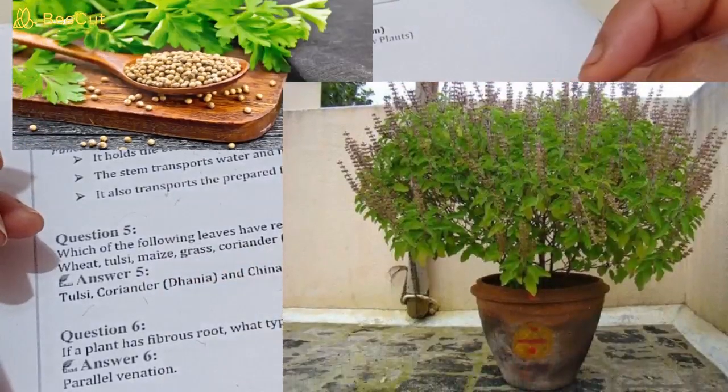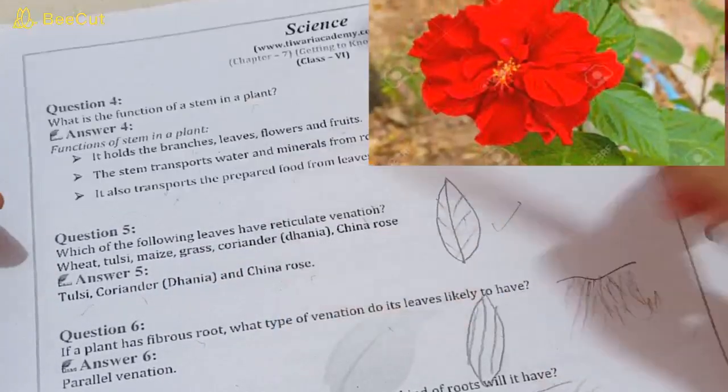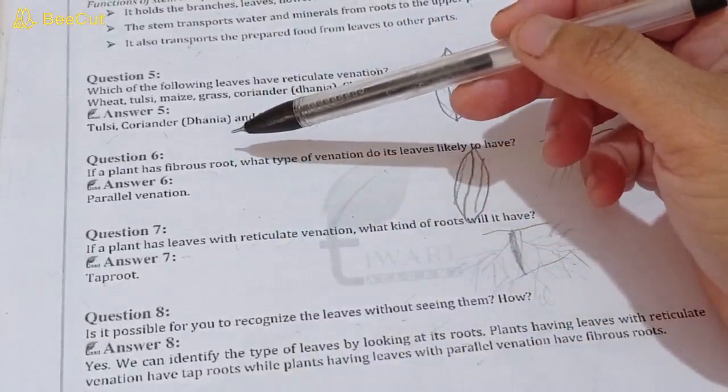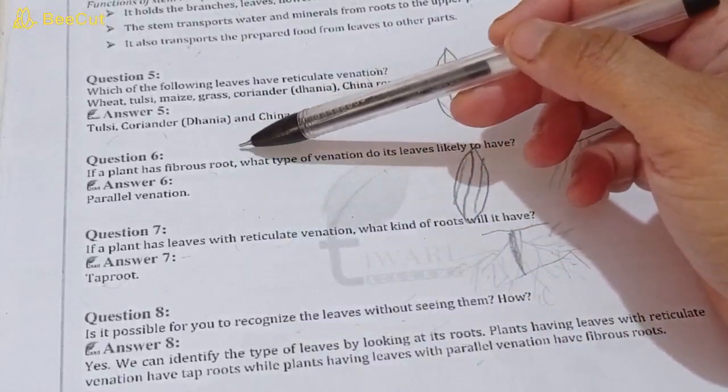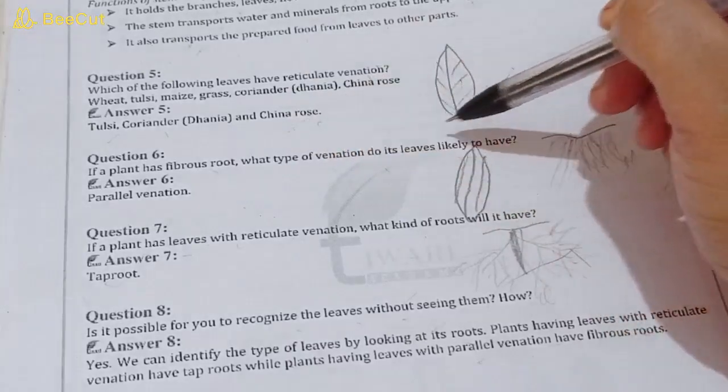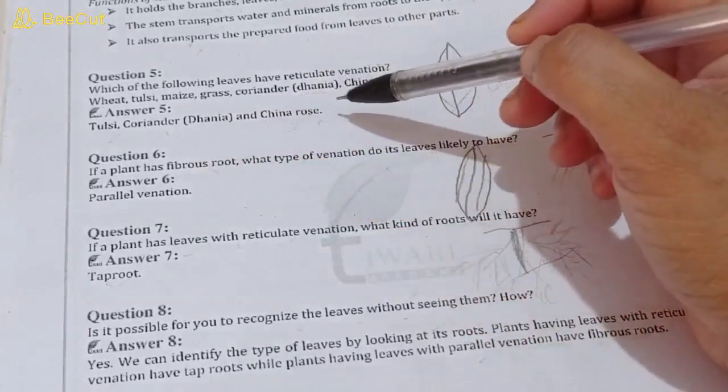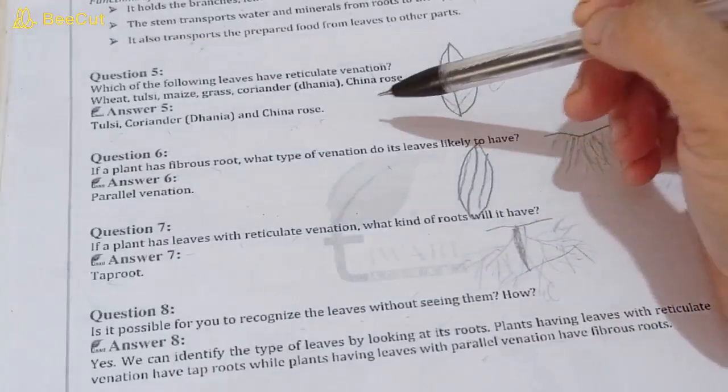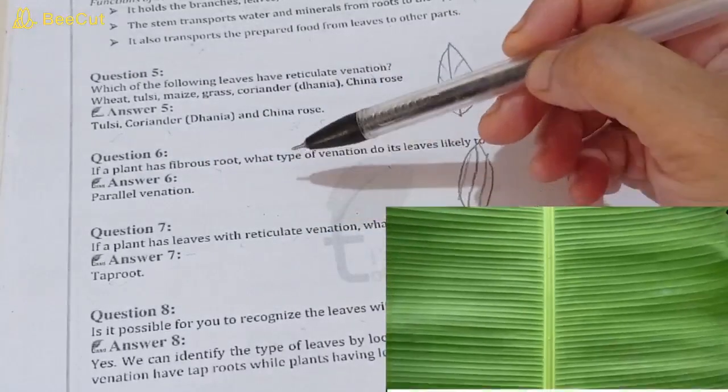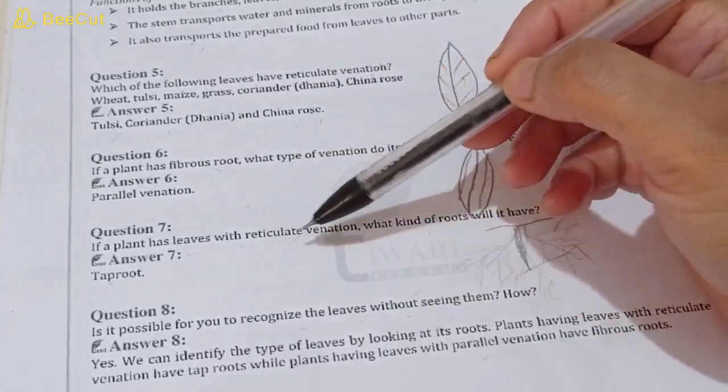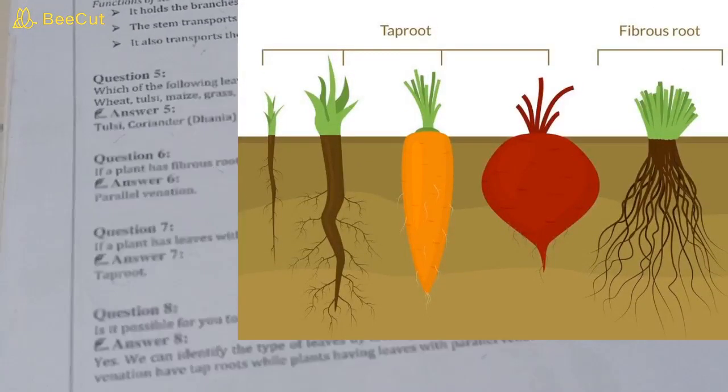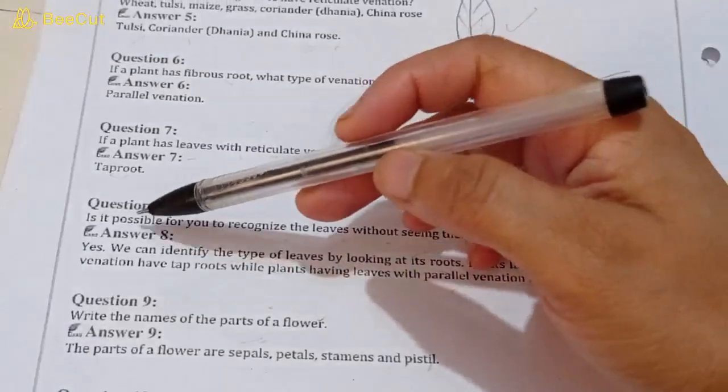Question number six: if a plant has fibrous roots, what type of venation do its leaves likely to have? If a plant has fibrous roots, then what type of venation will be seen in its leaves? The answer is parallel venation. Question seven: if a plant has leaves with reticulate venation, what kind of roots will it have? Answer is taproot.